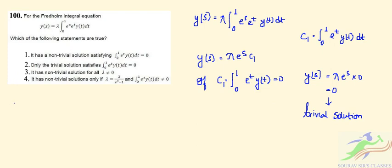Checking option 3: it claims a non-trivial solution exists for λ ≠ 0. We set up the 1×1 system: (1 − λ · α₁₁) · c₁ = β₁, where α₁₁ = ∫₀¹ e^t · e^t dt = ∫₀¹ e^(2t) dt.